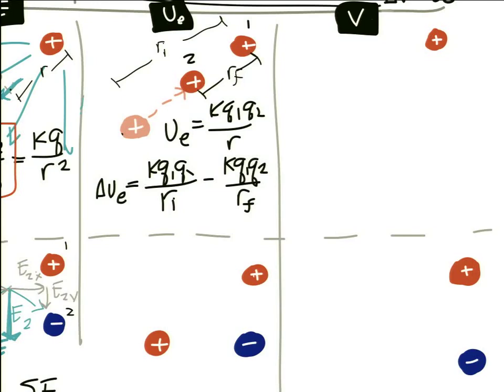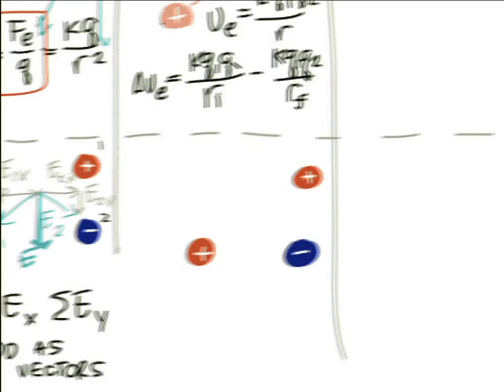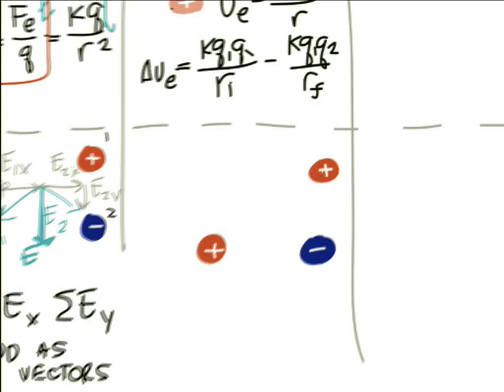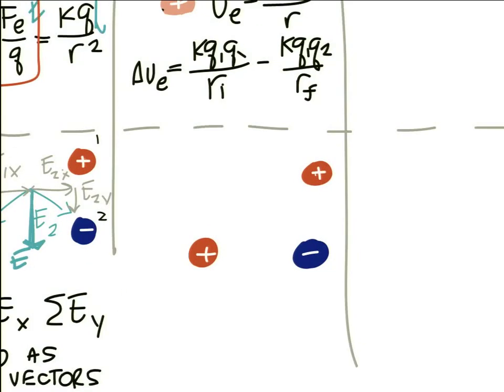We can add one more complication by adding another particle into the mix. In the situation below, I've added a negative charge, and the question is: what is the total electric potential energy of this three-particle system?